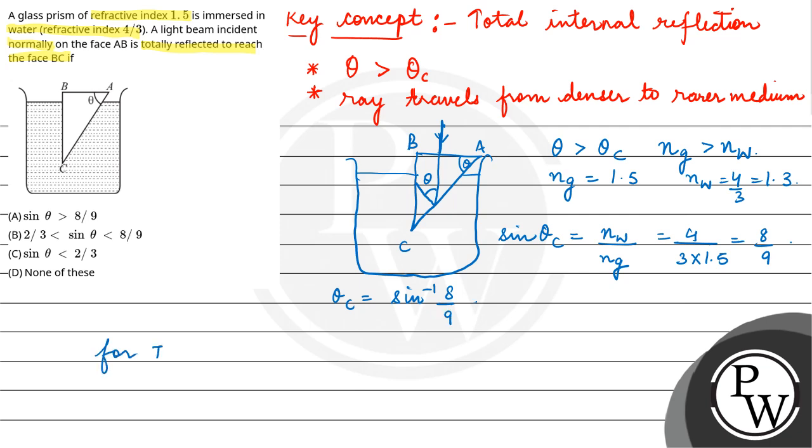Now, for TIR to occur, the angle of incidence must be more than the critical angle. So that means theta must be greater than sine inverse 8/9.